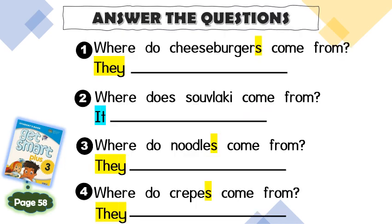What about we answer some questions. The first one is: where do cheeseburgers come from? How do you answer this? Look here — cheeseburgers with S means it's plural, so we use 'they'.